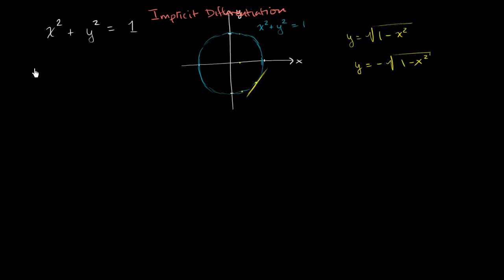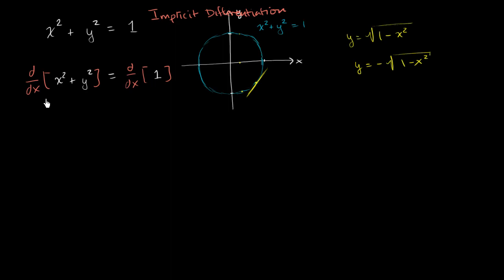So let's apply the derivative operator to both sides of this. So it's the derivative with respect to x of x squared plus y squared on the left-hand side of our equation, and that's going to be equal to the derivative with respect to x on the right-hand side. Now, if I take the derivative of the sum of two terms, that's the same thing as taking the sum of the derivatives. So this is going to be the derivative with respect to x of x squared, plus the derivative with respect to x of y squared.